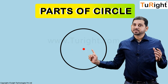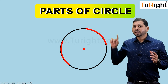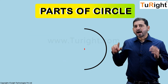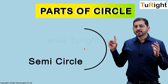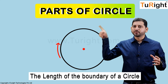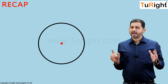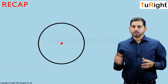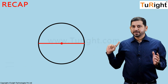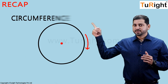A diameter is two radii put together. Moving from the center to the boundary, any part of a circle is called an arc. An arc which goes halfway around the circle is called a semicircle. The length of the boundary of a circle is called the circumference. Quick recap: center, radius, chord, diameter, arc, semicircle, circumference.